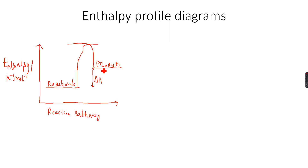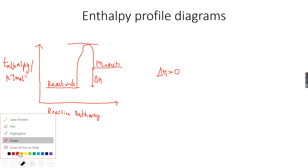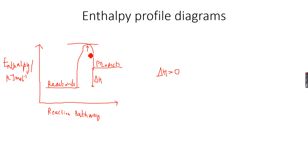The overall enthalpy change is still delta H, which is the difference in the energy of the reactants and the products. Since this is an endothermic reaction, delta H is greater than zero — you can see the products have more energy than the reactants. This energy gap between the reactants and the intermediate stage is called the activation energy, Ea.